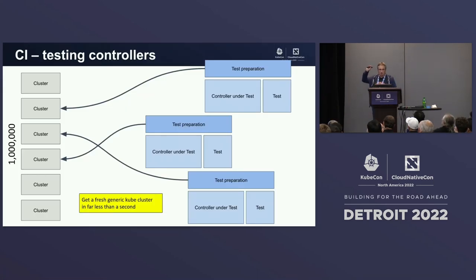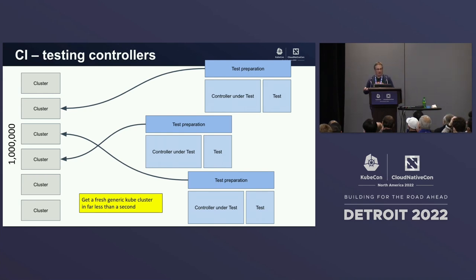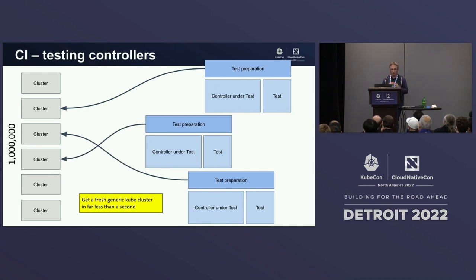Some examples of what you could build with that. Who has built end-to-end tests of controllers? With controller runtime and controller tools there's something like an envtest — it starts an API server and you can do your control loop testing. If you have such a thing with space for one million workspaces, forget about spinning up an API server. Just use this and point your controller against one workspace, do stuff until it's finished, then delete the workspace — one millisecond, you have a new one. Super cheap, super easy. That's one use case.